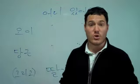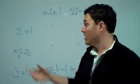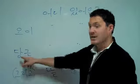So, we can say, 오이 어디 있어요? 오이. It's cucumber. 오이 어디 있어요? 당근 어디 있어요?